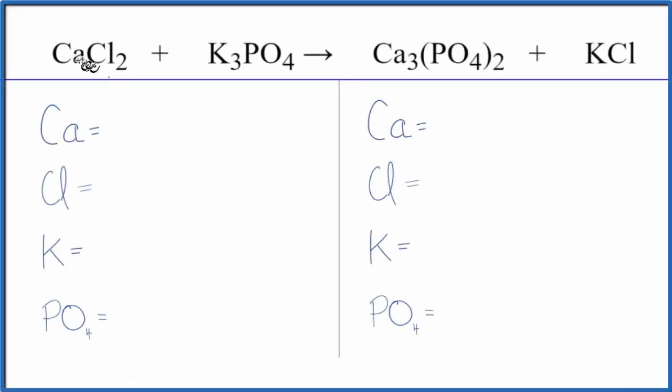In this video we'll balance the equation CaCl2 plus K3PO4. We have calcium chloride and potassium phosphate.